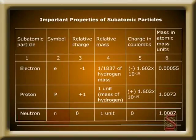For neutron, the symbol is N. Relative charge is 0. Relative mass is 1 unit. Charge in coulombs is 0. Mass in atomic mass units is 1.0087.